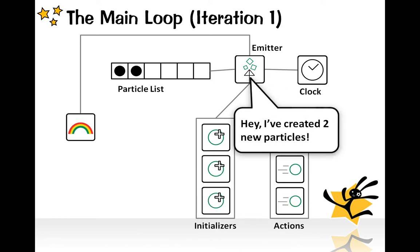Then the emitter would inform the renderer that it has created two new particles and the renderer would handle them. For the display object renderer, it would add the corresponding display objects for the newly created particles to the display list.